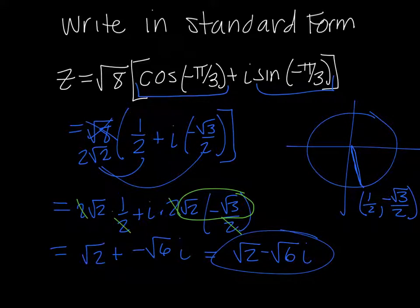So again, all we did was the math. We figured out what this was, and what this was. I took this number in front and multiplied it through, so I multiplied it times both of them. Then we did whatever simplification we can do and wrote it in standard form. That's just writing in standard form from trig form. It's not actually all that bad in this case.